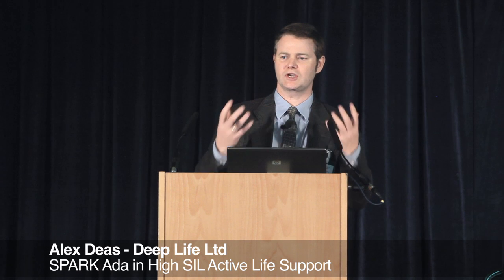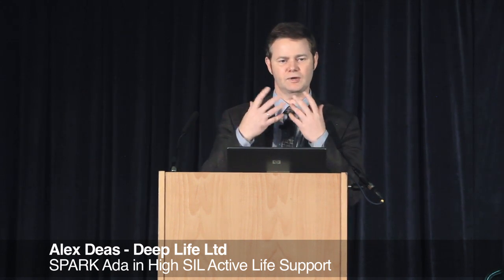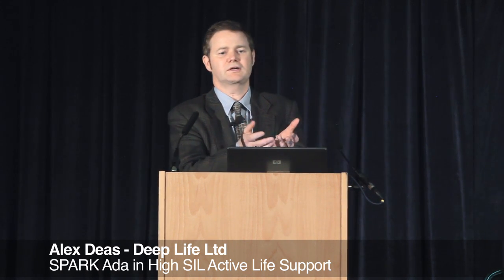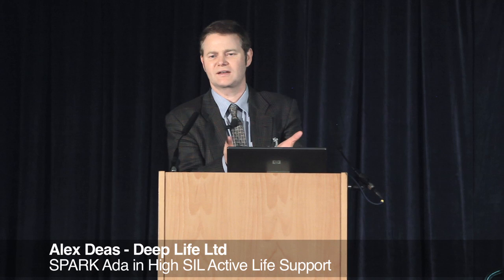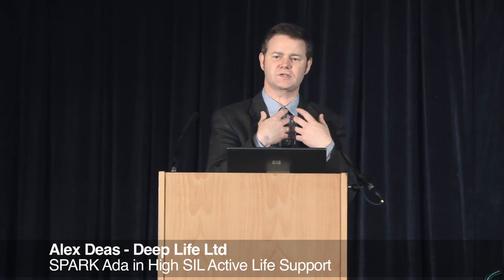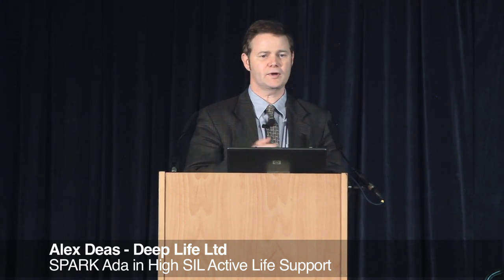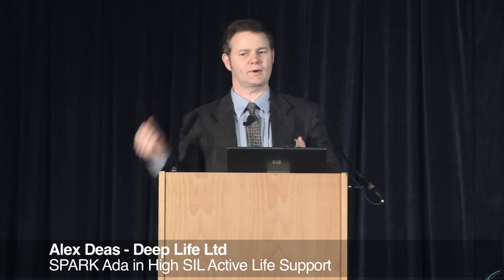The rebreather recirculates the gas. We breathe out roughly 4% carbon dioxide, and we breathe in 20% oxygen, burning up roughly about 4% of that. So what the rebreather does is it takes away the carbon dioxide and puts back the oxygen.